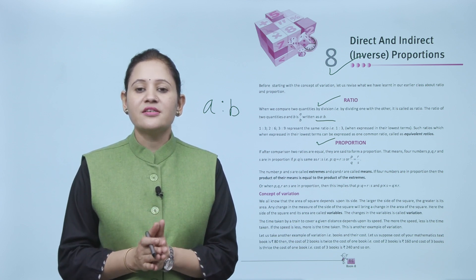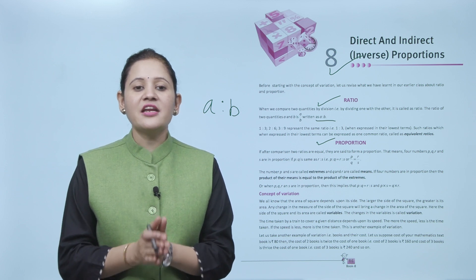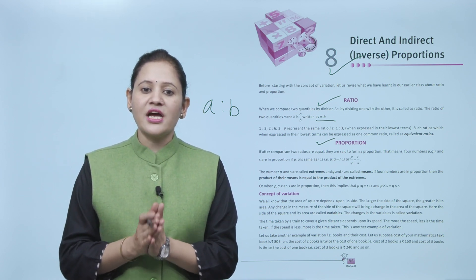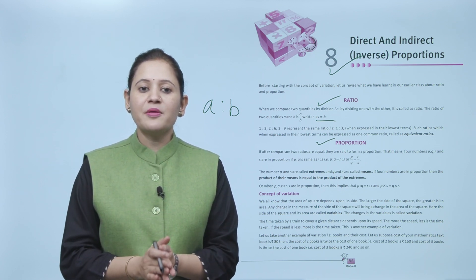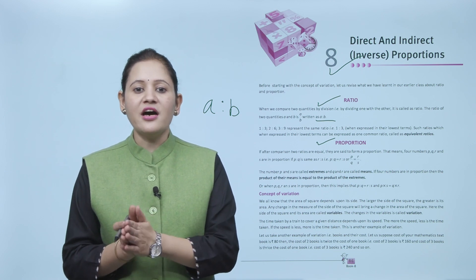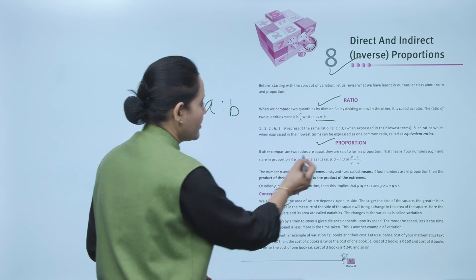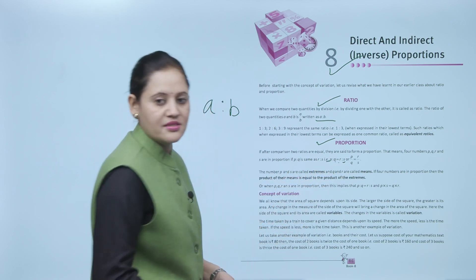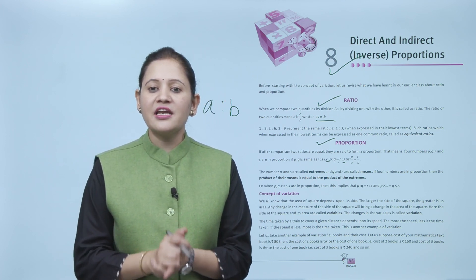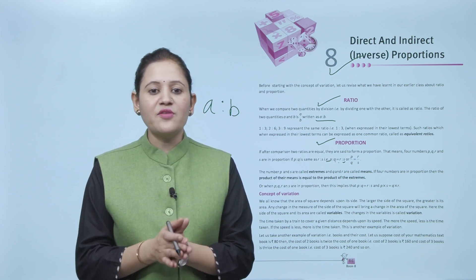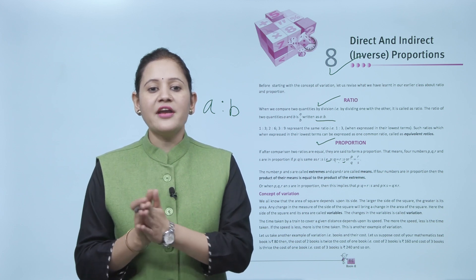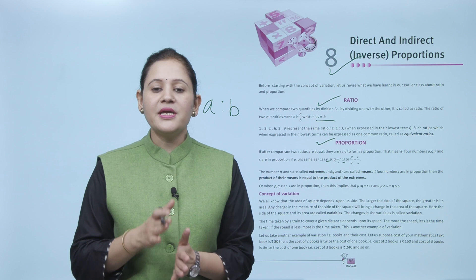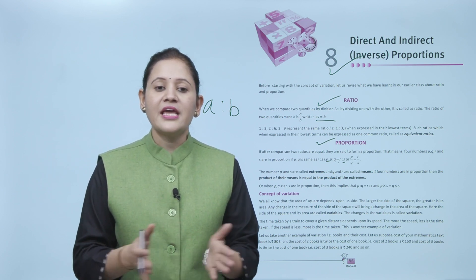Next is proportion. If two ratios are equal they are said to form a proportion. Four numbers P, Q, R and S are in proportion if P:Q equals R:S, or P/Q equals R/S. P and S are called the extremes and Q and R are called the means. If four numbers are in proportion, the product of their means equals the product of their extremes: P×S = Q×R.